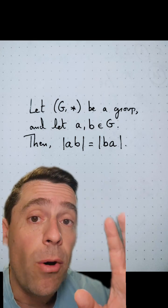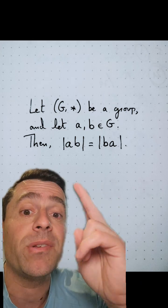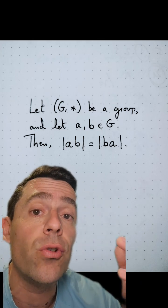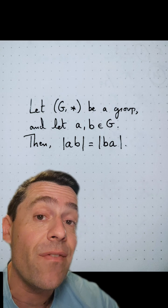Now, if G was commutative, this would be trivial because A times B is B times A, and of course those two elements are the same and they have the same order.